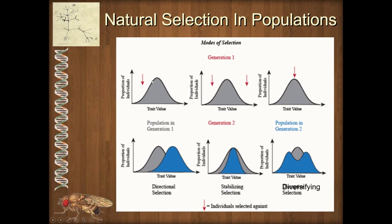We're assuming that this phenotype has some genetic component, maybe even mostly genetic. If we were talking about something like height in humans, most of our height comes from our genes, although in extreme circumstances our environment may play a role. So if we were to have strong selection against short individuals, then over time the population would shift. We would still have some short individuals, but on average individuals would get taller over time.